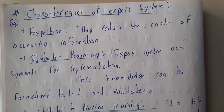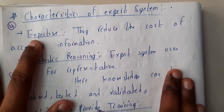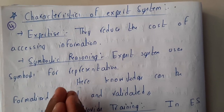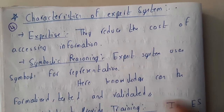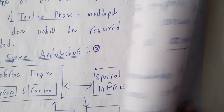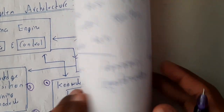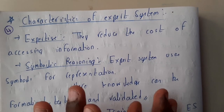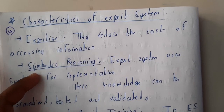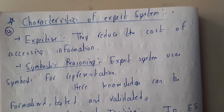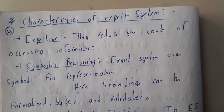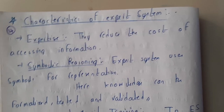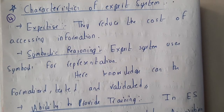So the first characteristic is expertise. The data will be stored in the heart of the expert system — the knowledge base. If you remember the diagram it will be really easy. In the knowledge base, the accessing of information will be done in an efficient and faster way with the help of the inference engine. The inference engine and knowledge base play a major role, and the cost of accessing information is really reduced compared to the traditional way.